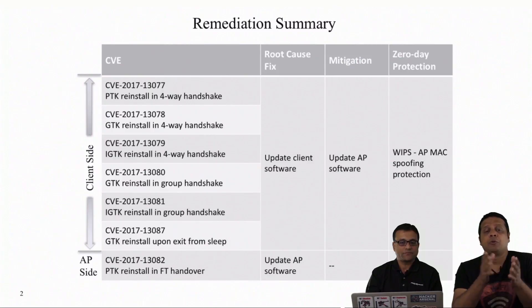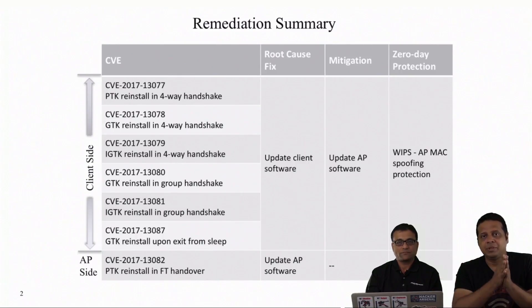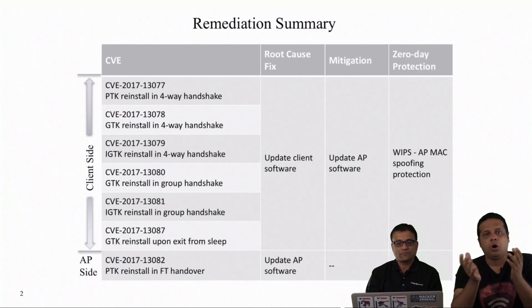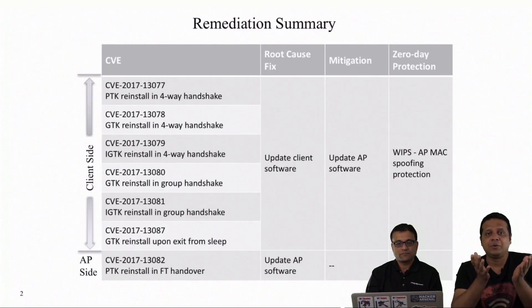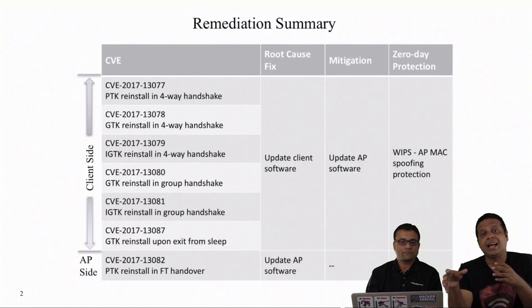This may not always be possible, so there is mitigation available on the AP side in the interim while client fixes are being deployed. By updating the AP software, fixes can be put in place. Additionally, if you have zero-day protection using wireless intrusion detection and prevention systems, they can detect things like AP MAC spoofing and many other things these attacks rely on, in order to detect those attacks in the wild.